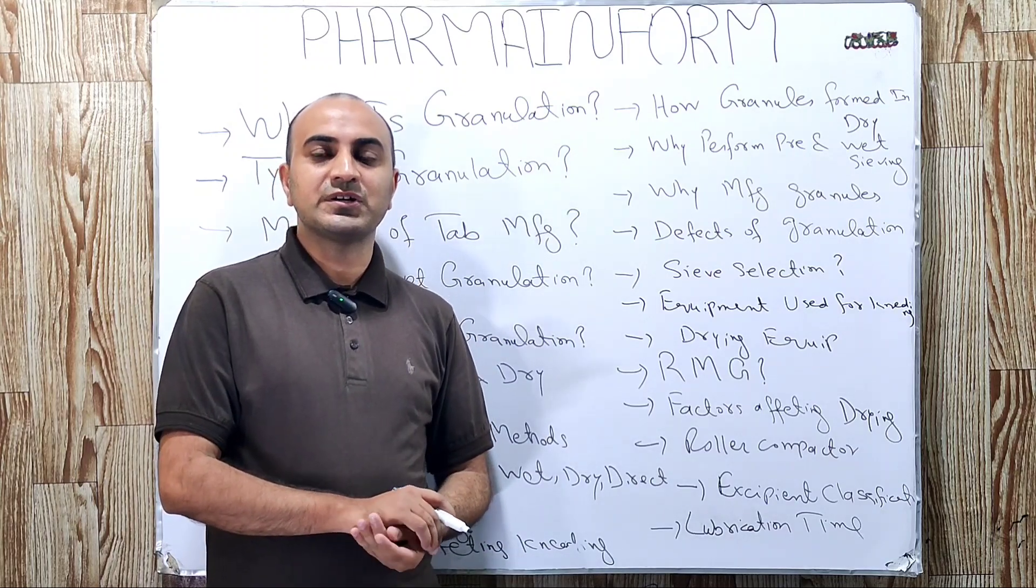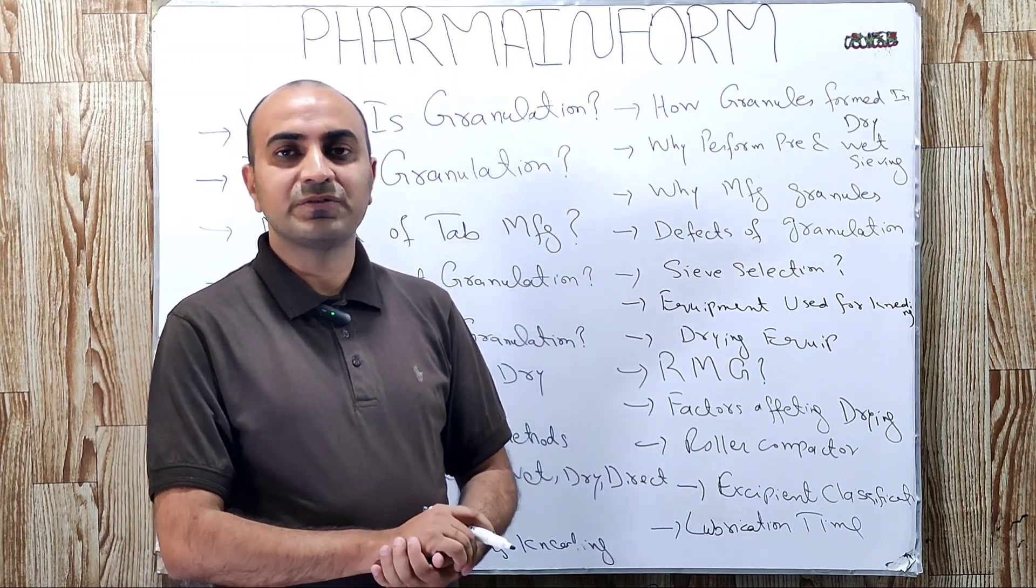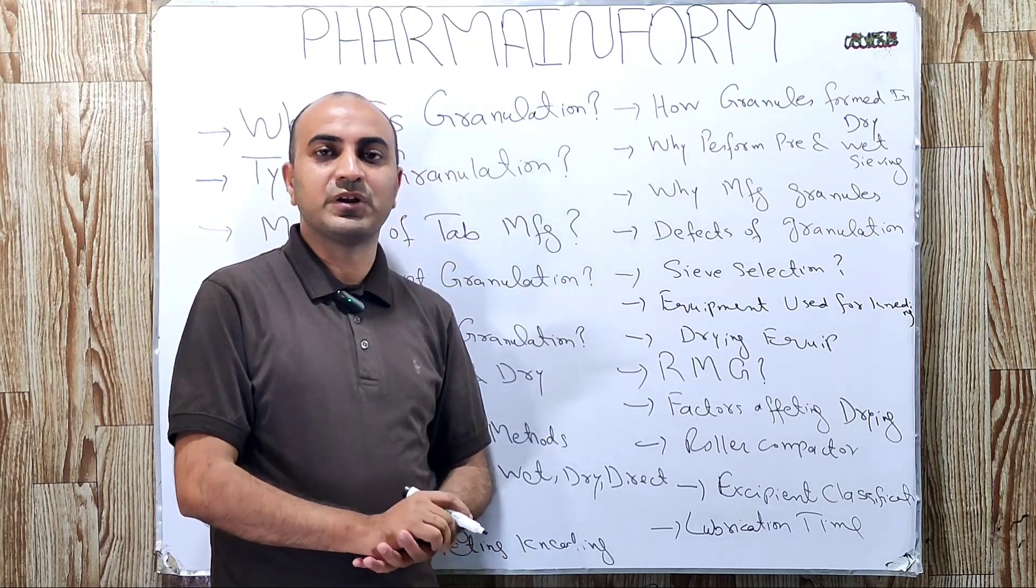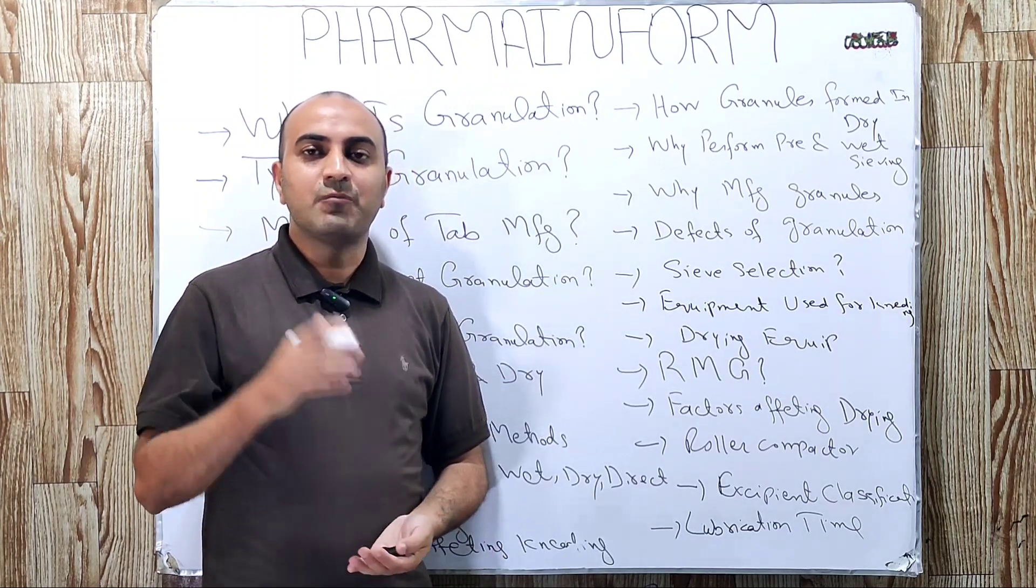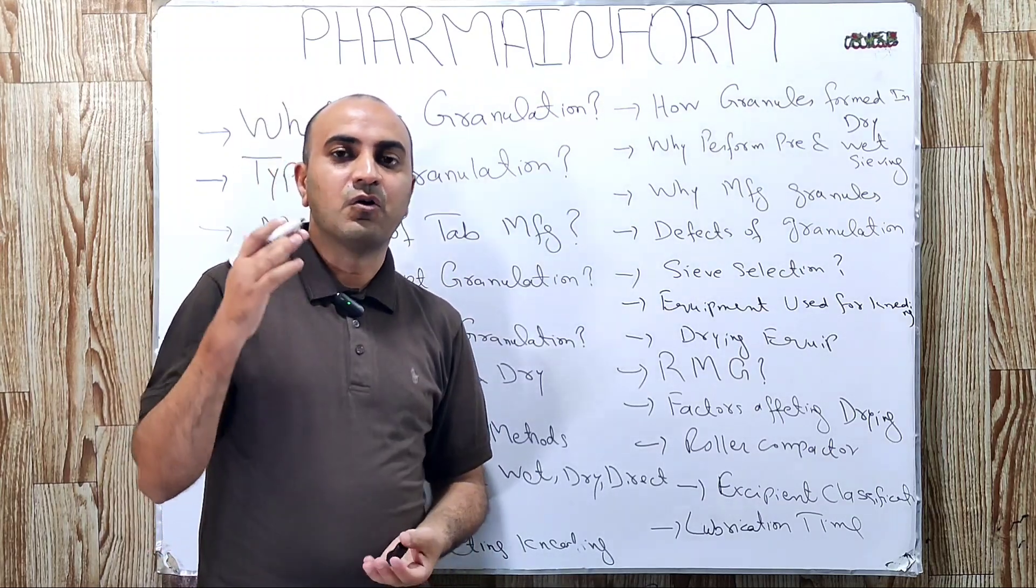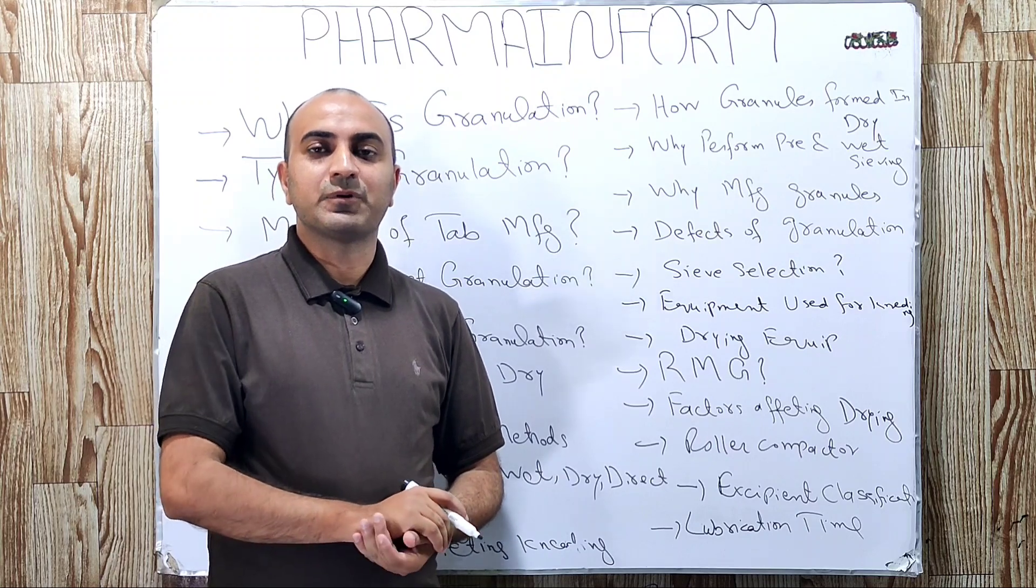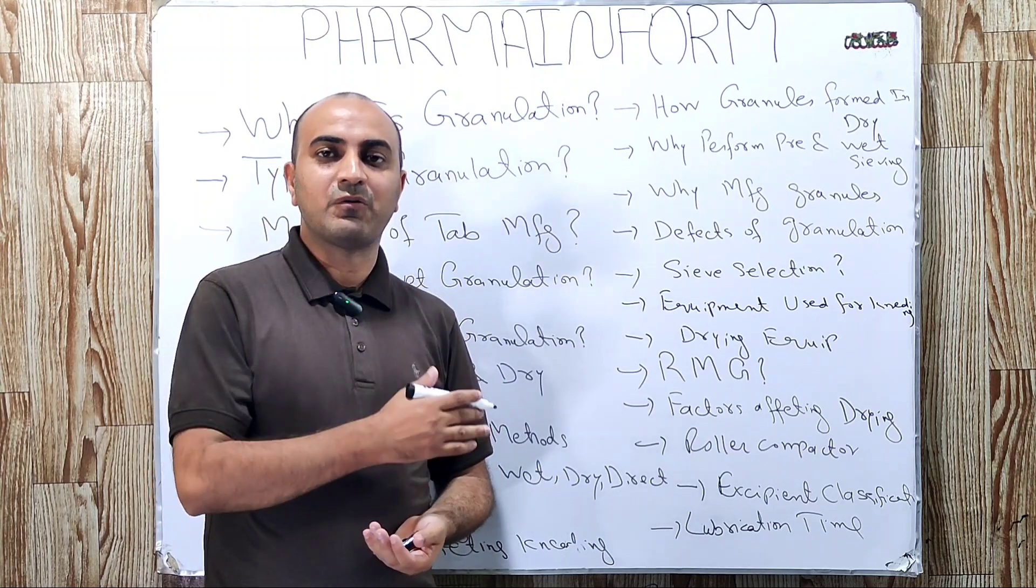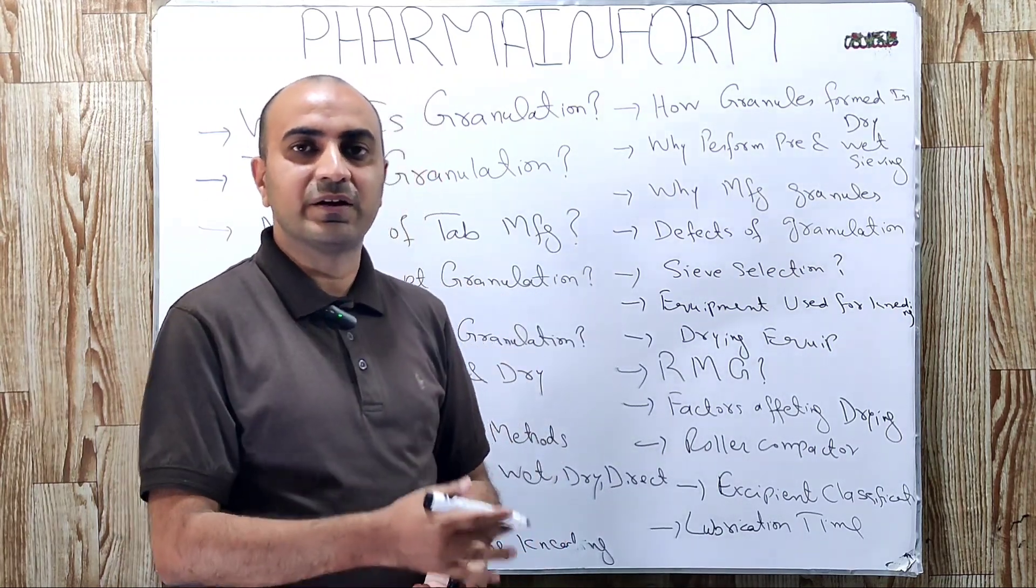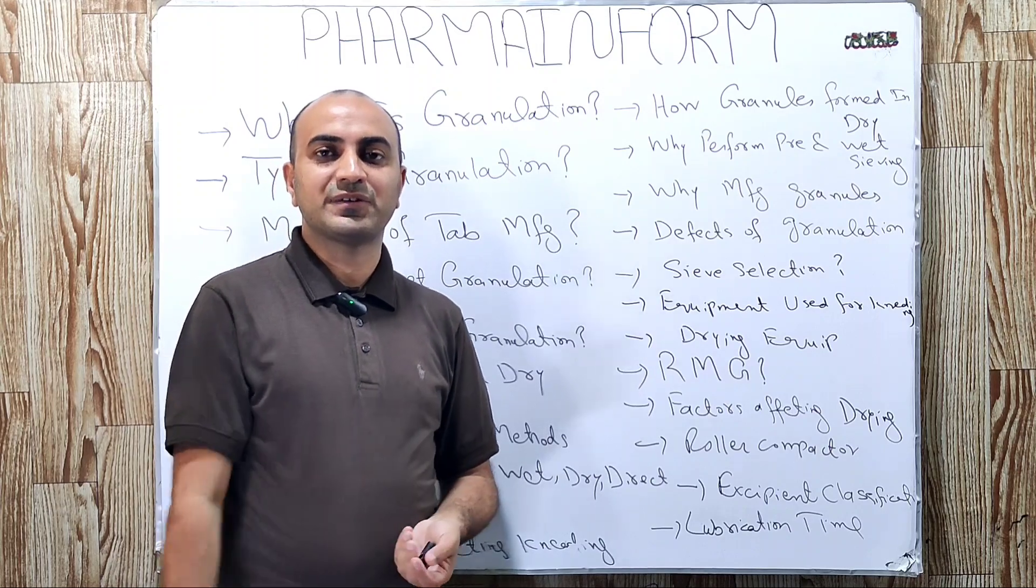Granulation is defined as the process in which powders are converted into large agglomerates or granules by using binder solution, solvent, or by the application of pressure. It means the process where we convert powders into granules by using solution, solvent, or application of pressure is known as granulation.